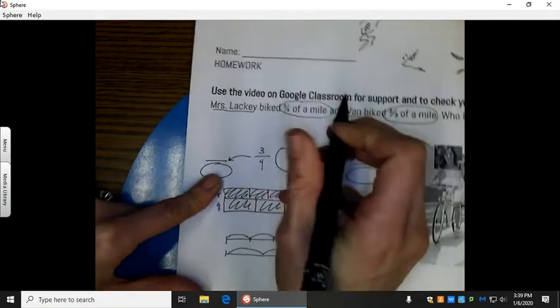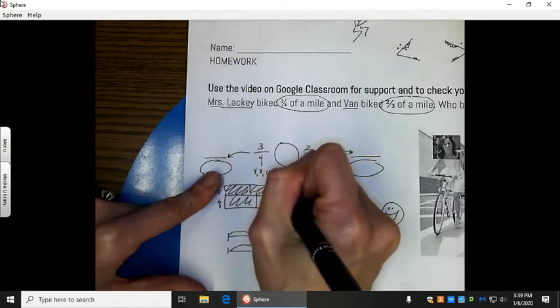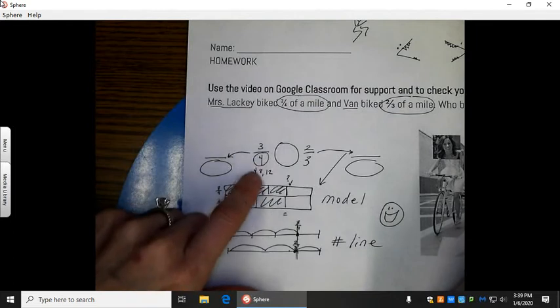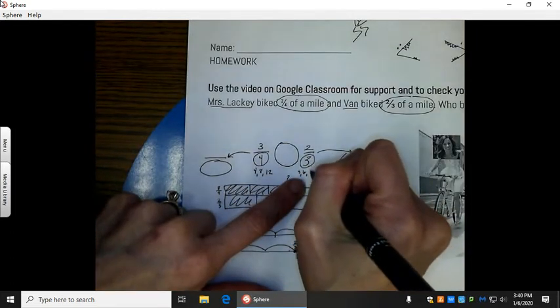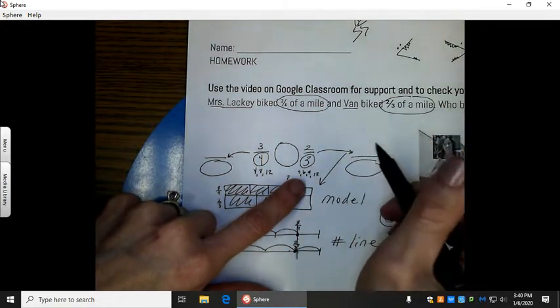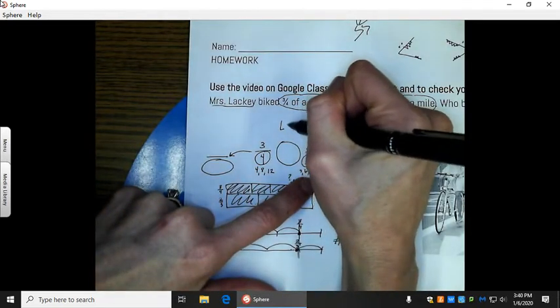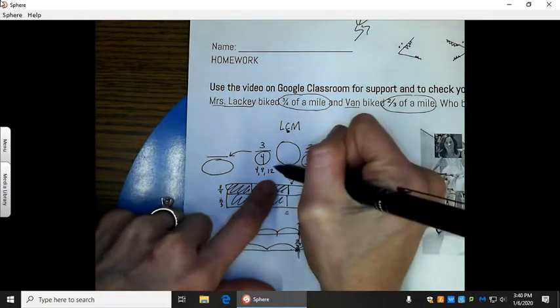Okay. So, we're skip counting. Let's skip count by four. We get four, eight, twelve. We're finding a new denominator. So, we're skip counting by that denominator. Let's skip count by three. Three, six, nine, twelve. Same denominator, find the multiples. What kind of multiples? Least common multiple. The smallest one they have in common, twelve.